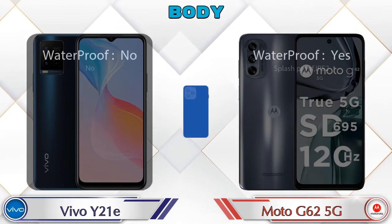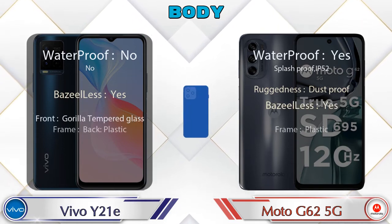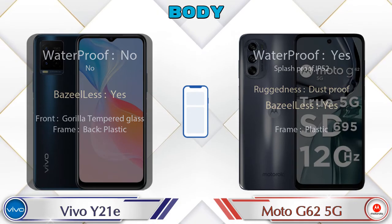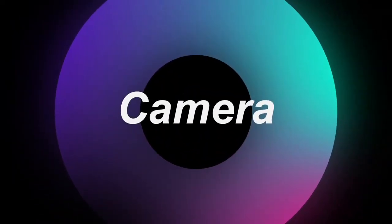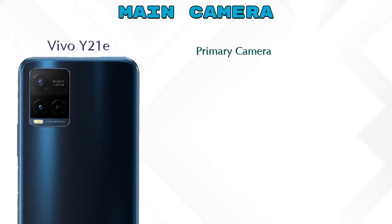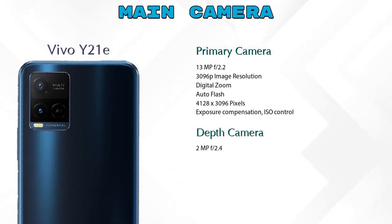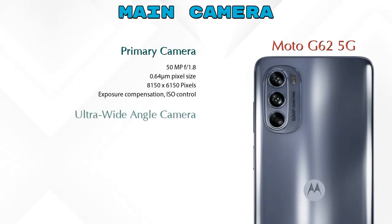Let's see the complete details about the body of both phones. Now let's talk about our favorite feature: the camera. First, talking about the rear camera, the Y21e has two cameras — a primary camera and a depth camera. The Moto G62 5G has three cameras: a primary camera, an ultra-wide angle camera, and a macro camera.